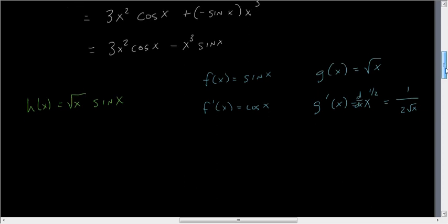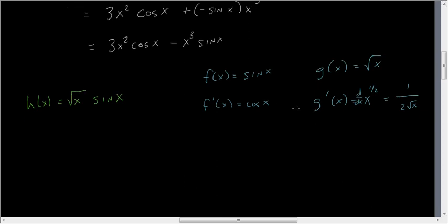All right. So now we're ready to go ahead and work our magic on the product rule. So product rule says h(x), or h prime of x, the derivative, first derivative, is equal to the derivative of the first function times the second, plus the derivative of the second function times the first.